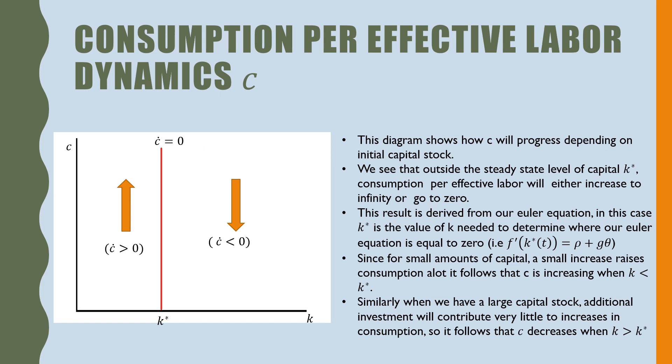This diagram shows how c will progress depending on the initial capital stock. We see that outside the steady state level of capital k star, consumption per effective worker will either increase to infinity or go to zero. This result is derived from our Euler equation.